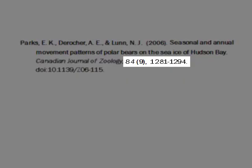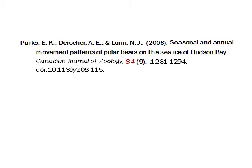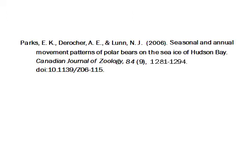The next elements give the specific location of the article in the journal. The volume number comes first and it's italicized like the journal title. Most of the time, but not always, an issue number comes next and appears in parentheses. Next comes the range of pages where the article appears.